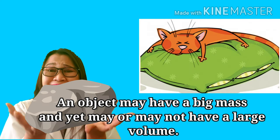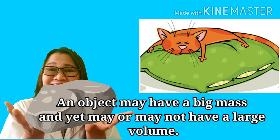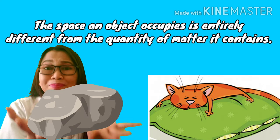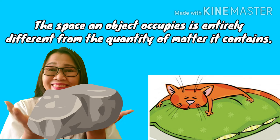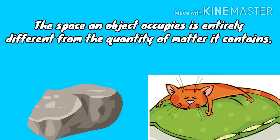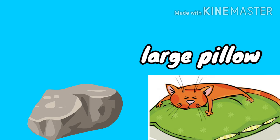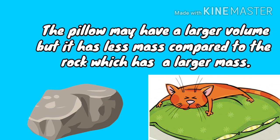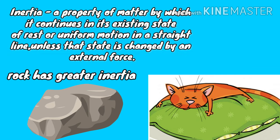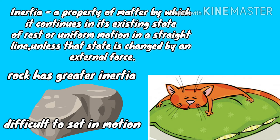An object may have a big mass and yet may or may not have a large volume. The space an object occupies is entirely different from the quantity of matter it contains. Take the case of a large size pillow and a rock. The pillow may have a larger volume but it has less mass compared to the rock, which has a larger mass. This means that the rock has greater inertia, making it more difficult to set in motion.